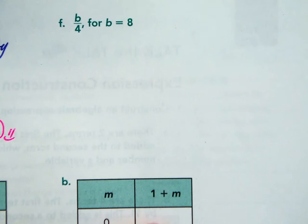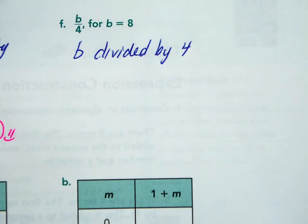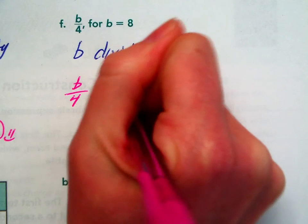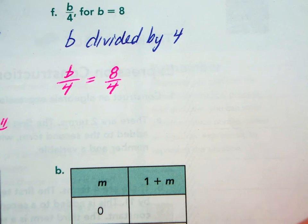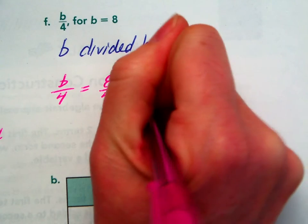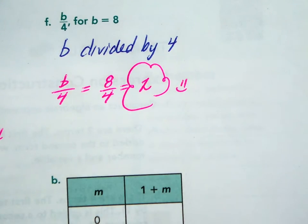Let's try this one. B divided by 4. They're probably going to call it the quantity of B divided by 4. Let's just say B divided by 4. B is 8. So if I start as B over 4 and I replace it to 8 over 4, 8 over 4 is going to turn into a nice whole number 4th, which is 2. 2 is your answer. Happy answer.